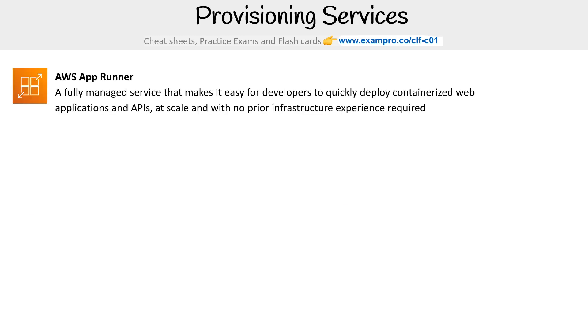Then we have AWS App Runner. This is a fully managed service that makes it easy for developers to quickly deploy containerized web apps and APIs at scale with no prior infrastructure experience required. It's basically a platform as a service, but for containers.